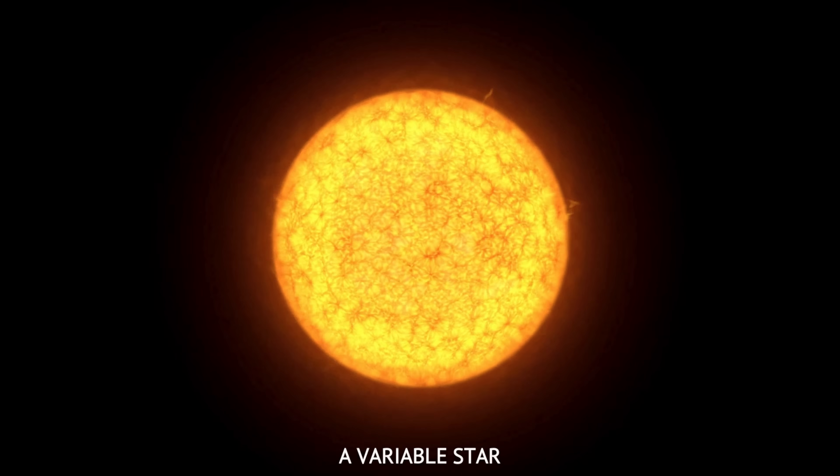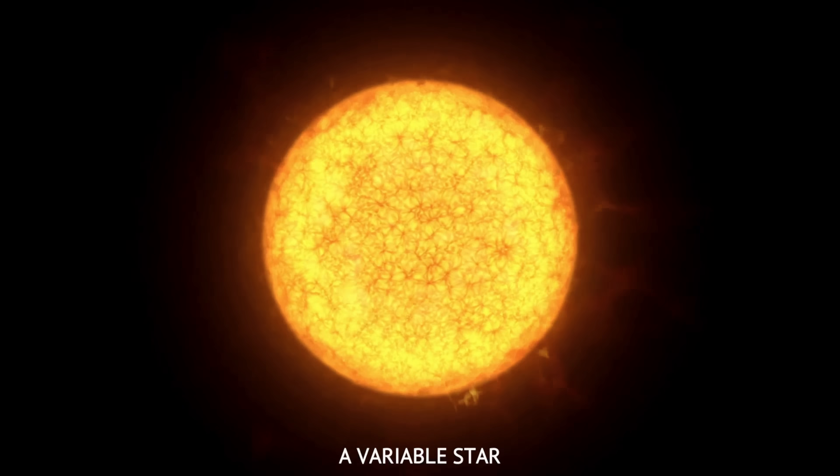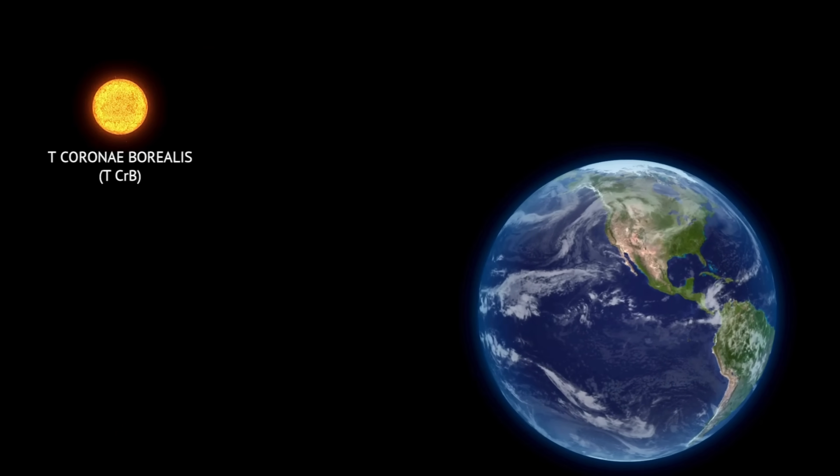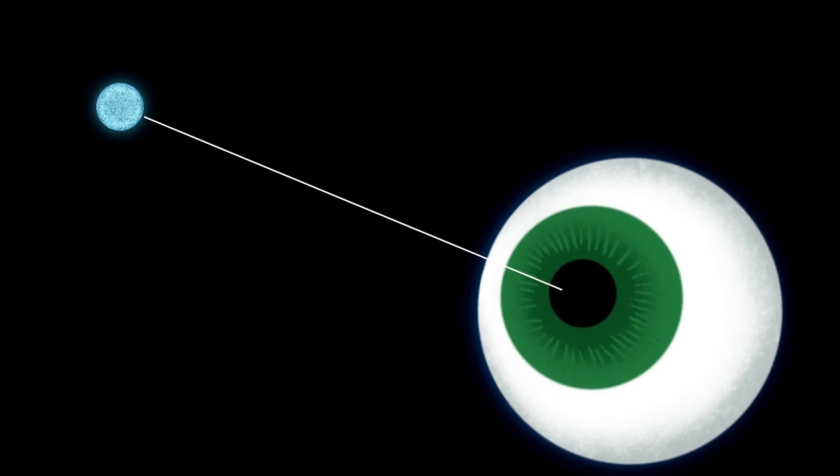A variable star is a star that appears to change brightness from Earth's perspective over time. T CrB is 2,600 light years from Earth, meaning that the events we observe today actually occurred 2,600 years ago.